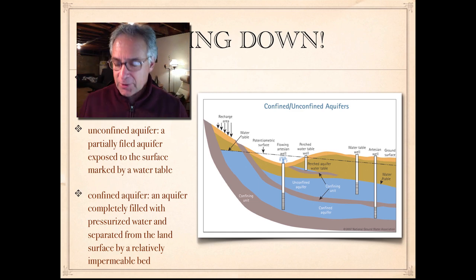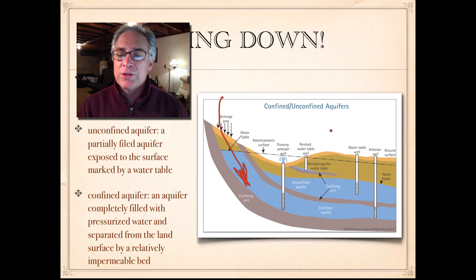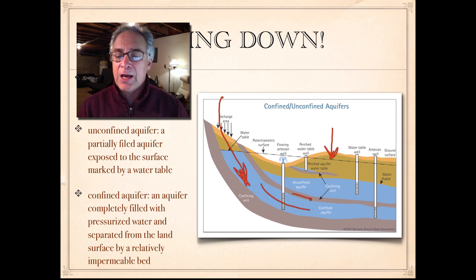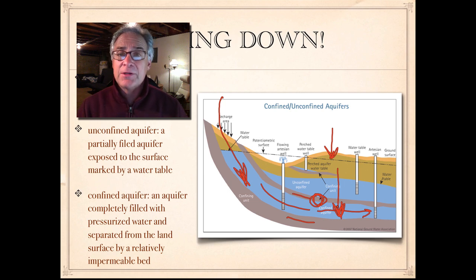There are two reasons why it's under pressure. Number one, it's being recharged from a different place. Number two, it has two confining layers. It tends not to empty, because if it did, all of the overlying material would come crashing down and you'd have what we call subsidence — the land around it would sink. We see that in the southeastern part of the United States from time to time with these big sinkholes. That's typically what happens.